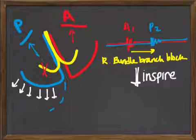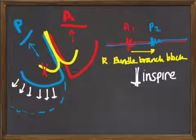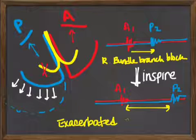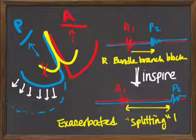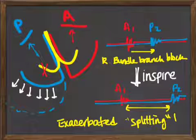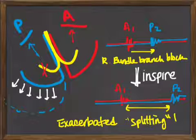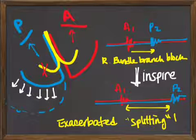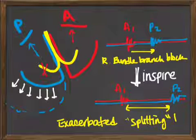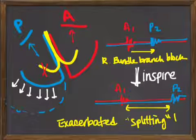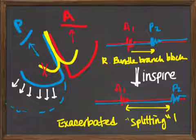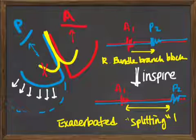And if you inspire, if you tell the patient to inspire, what do you think is going to happen? Well, look, remember, inspiring increases negative pressure in your thorax, increasing the volume in your left ventricle, delaying the closure of the pulmonic valve. So the delay that was caused by the right bundle branch block gets worse. It gets exacerbated by the splitting that's induced during inhalation. So if you inhale, it will allow you to differentiate or to dissociate between these two types of bundle branch blocks.